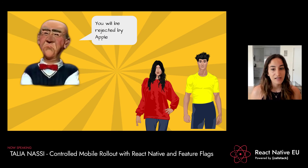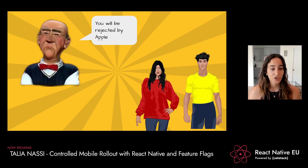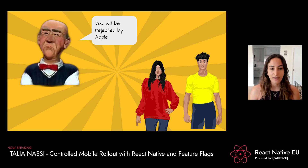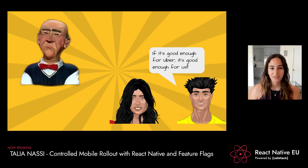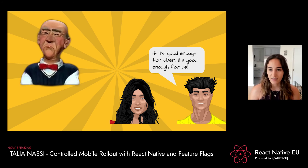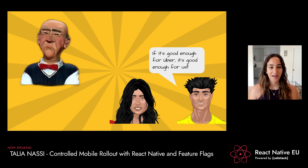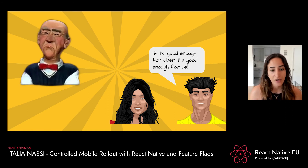Grumpy old dev says: okay fine, but Apple will reject your app because if you keep making changes more frequently than two weeks, it's against App Store regulations. Debbie and John just smirk and say: Uber has thousands of feature flags in their iOS codebase, and if Uber can do it, so can we. In all seriousness, a lot of apps use this technique and Uber even published an academic paper on it. If it's good enough for Uber, it's good enough for us.